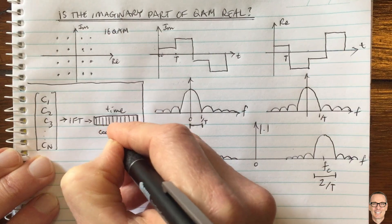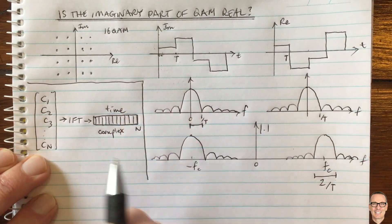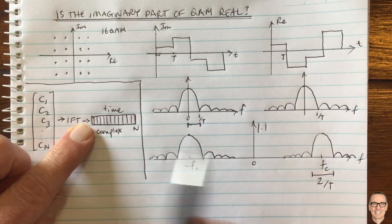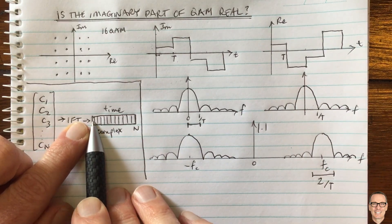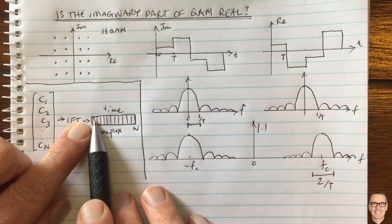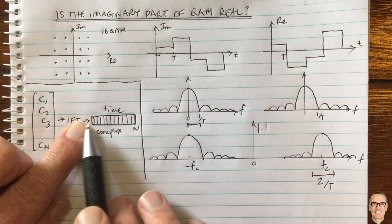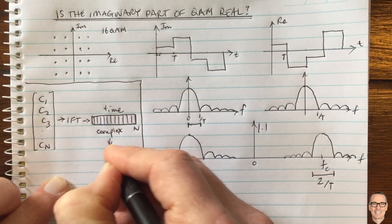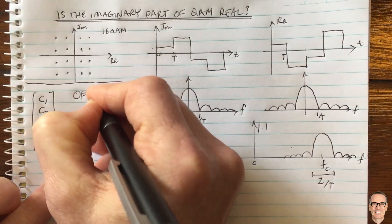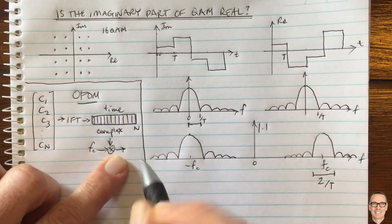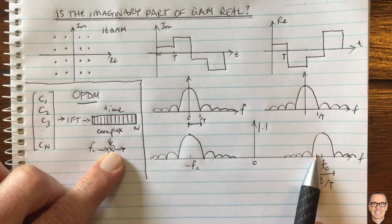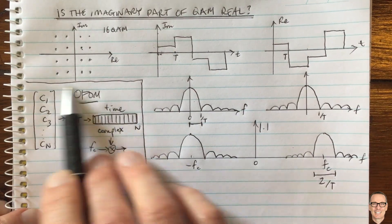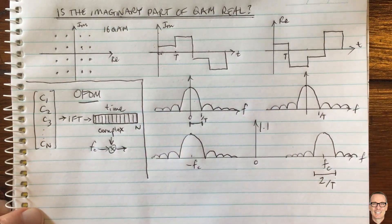These time-domain values are complex, so we still need to send complex numbers. Each complex number has two values to send. Just as before, we multiply by the carrier frequency fc — so in OFDM the same thing happens: we multiply by the carrier, giving a passband time-domain sequence with twice the bandwidth of the baseband. This is just a multi-channel version of what we showed for single-carrier QAM.